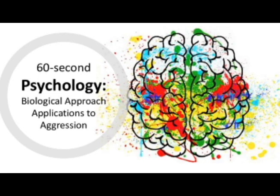Finally, whilst no single gene can be said to be solely responsible for any particular behaviour, the MAOA gene has been linked to aggression. This gene essentially mops up excess neurotransmitters after brain activity, therefore causing imbalances in serotonin, which, as previously mentioned, is linked to impulse control and therefore aggression.